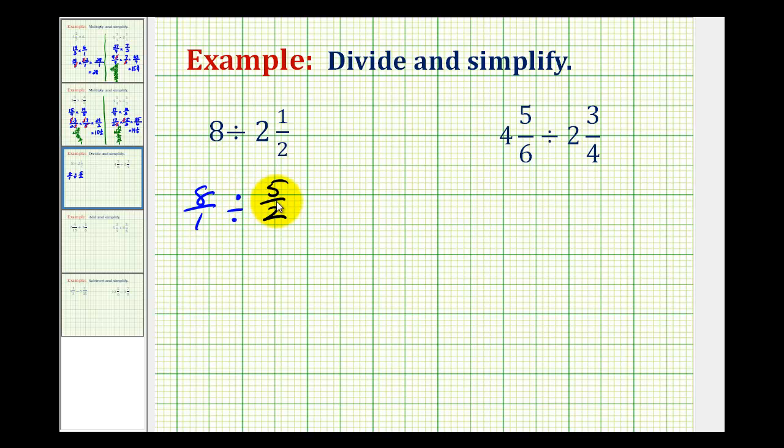And then instead of dividing by a fraction, we'll multiply by the reciprocal. So we can rewrite this division problem as a multiplication problem, and it would be 8 over 1 times 2 fifths. Notice that 2 fifths is the reciprocal of 5 halves.